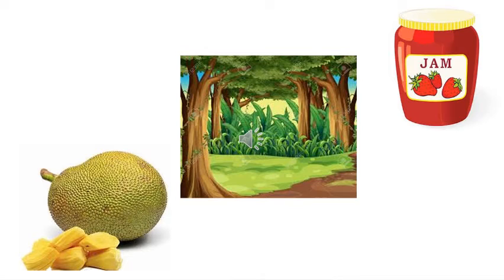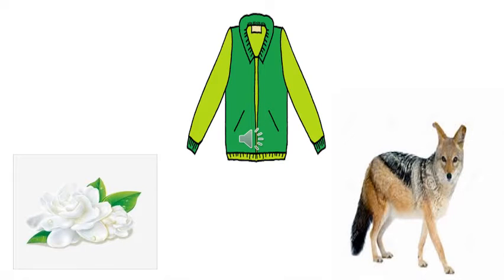The letter J makes the sound J. A few more pictures that start with the sound J. J — jasmine. Jasmine is the name of a flower. J — jacket, J — jackal.